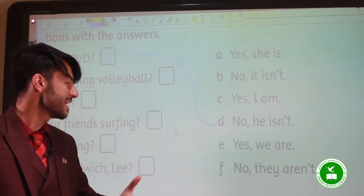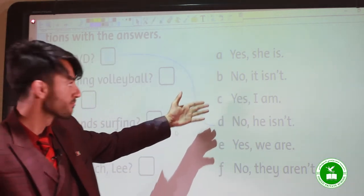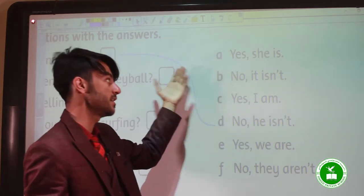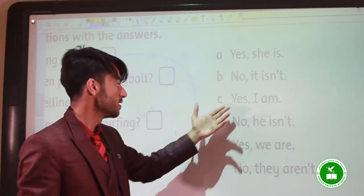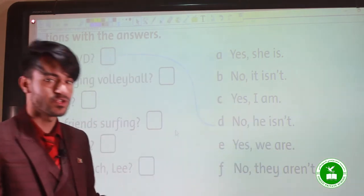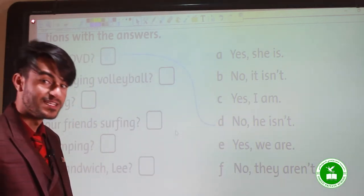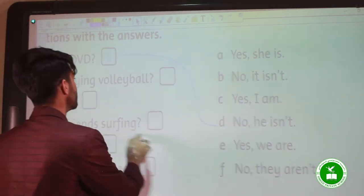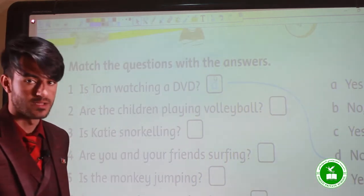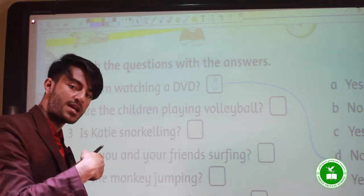The options are: Yes, he is. Yes, she is. No, it isn't. Yes, I am. No, he isn't. The answer is letter D, no he isn't. You can complete these yourselves. Do you want me to make another one? I will make another sentence.